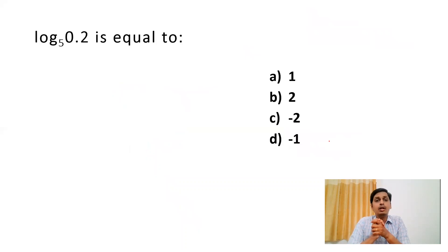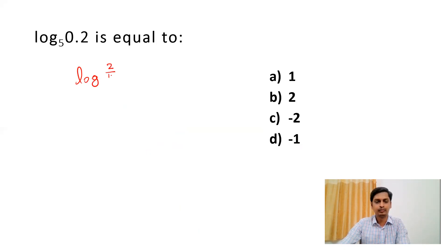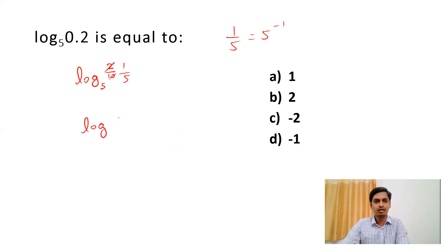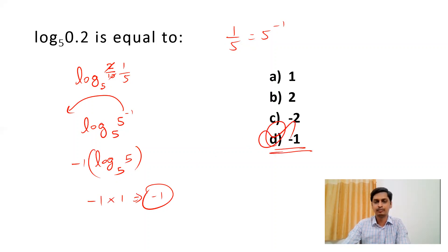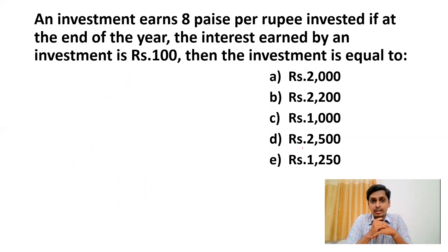Next question: log 0.2 to the base 5 is equal to what? We rewrite 0.2 as 2/10 = 1/5, which equals 5⁻¹. So we have log(5⁻¹) to the base 5. The exponent −1 comes out in front: −1 × log(5) to the base 5. Since log base 5 of 5 equals 1, the answer is −1 × 1 = −1.